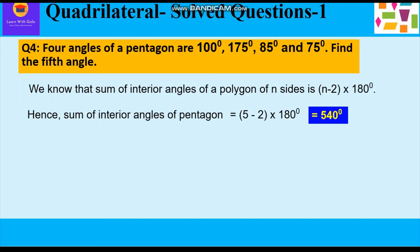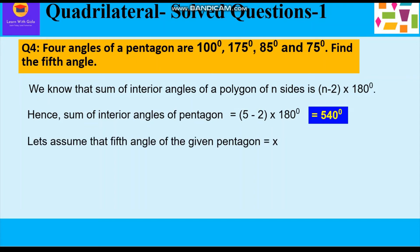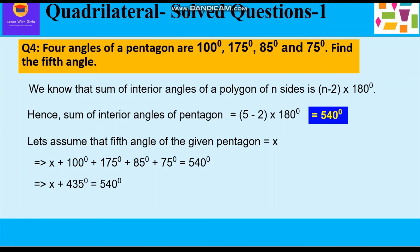We can write: x + 100° + 175° + 85° + 75° = 540°. So x + 435° = 540°, which gives x = 540° − 435° = 105°. The measure of the fifth angle of the given pentagon is 105°.